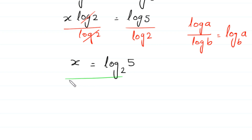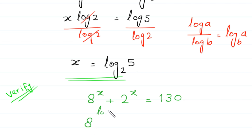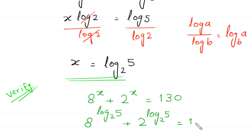This is the value of x — this is the final answer. Now, to verify this value of x, we put x equals log base 2 of 5 into the original equation: 8 to the power x plus 2 to the power x equals 130. Substituting, we get 8 to the power (log base 2 of 5) plus 2 to the power (log base 2 of 5) equals 130.